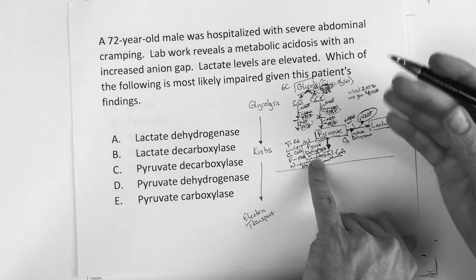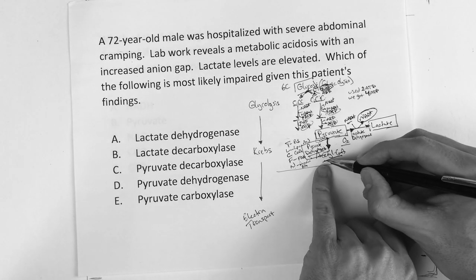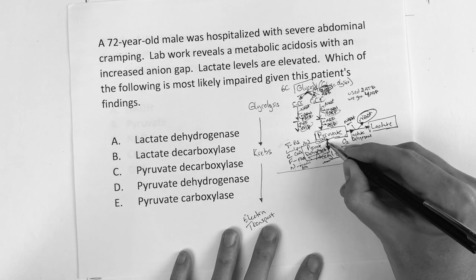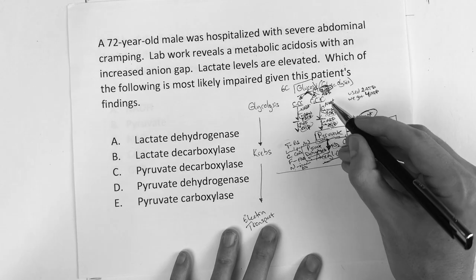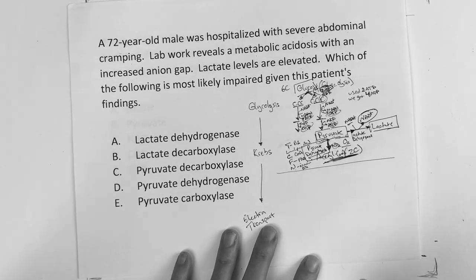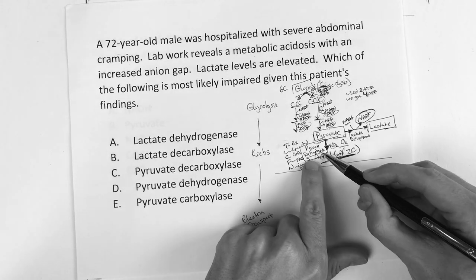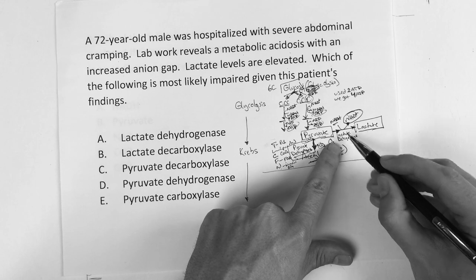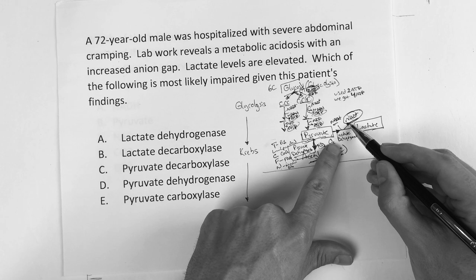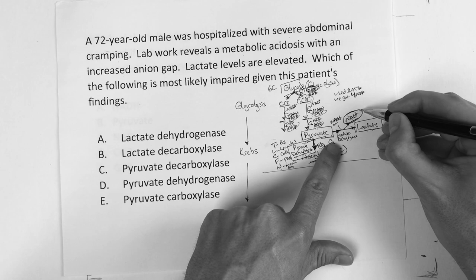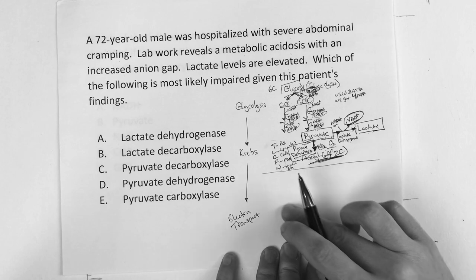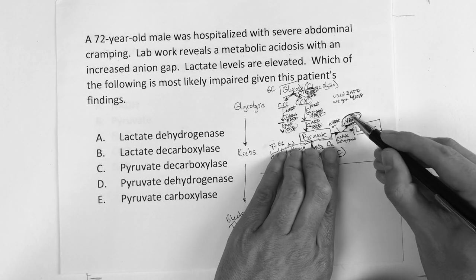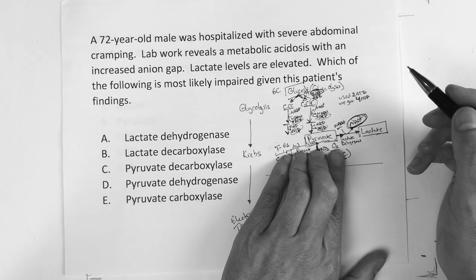Now at pyruvate, this is where you make your money. If pyruvate dehydrogenase is active — normally with oxygen and the Tender Loving Care For Nancy cofactors — it makes acetyl-CoA. Note that acetyl-CoA is two carbons, so one CO2 was released from the three-carbon pyruvate. Otherwise, pyruvate gets kicked toward lactate dehydrogenase. Going toward lactate is not very efficient, but at least it keeps the process going for now.